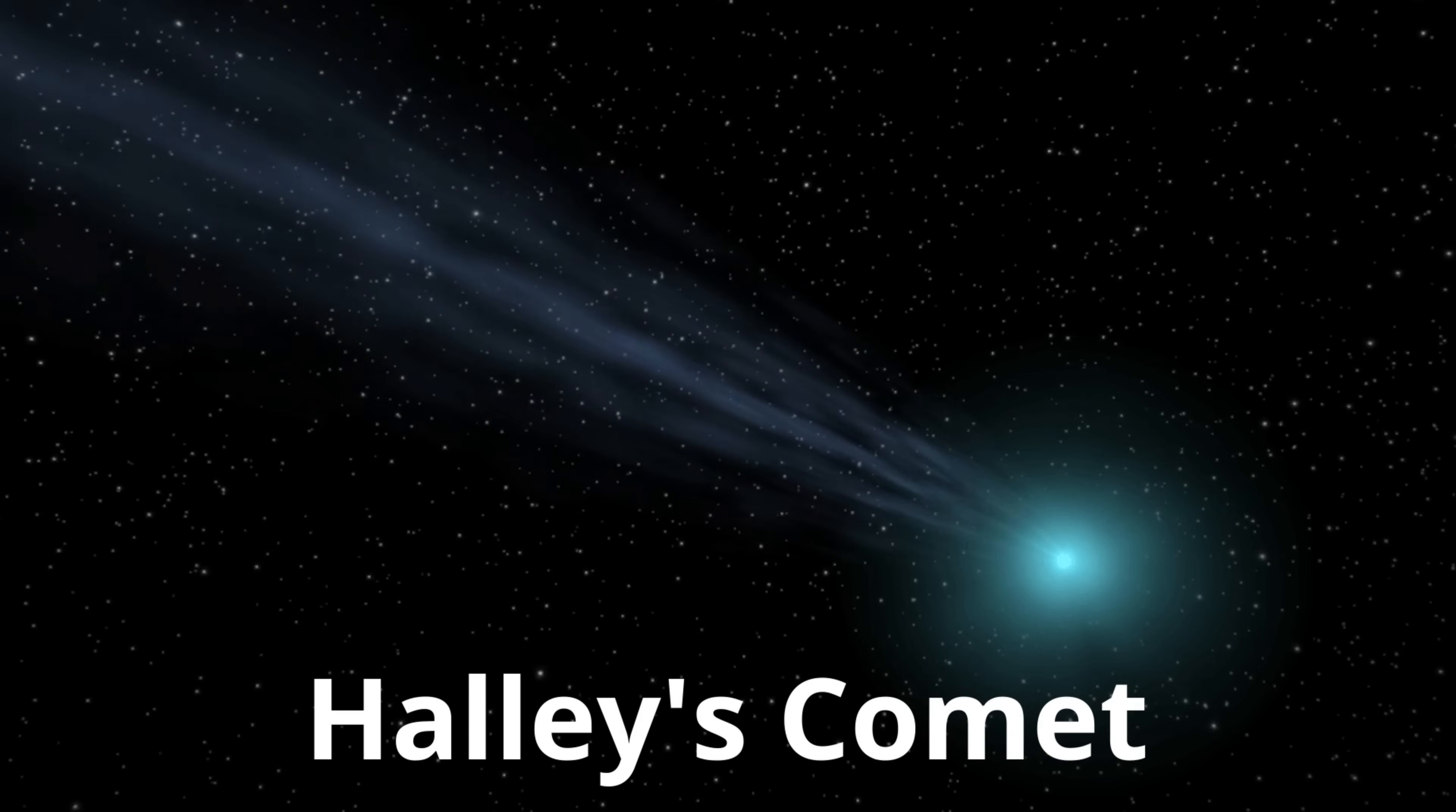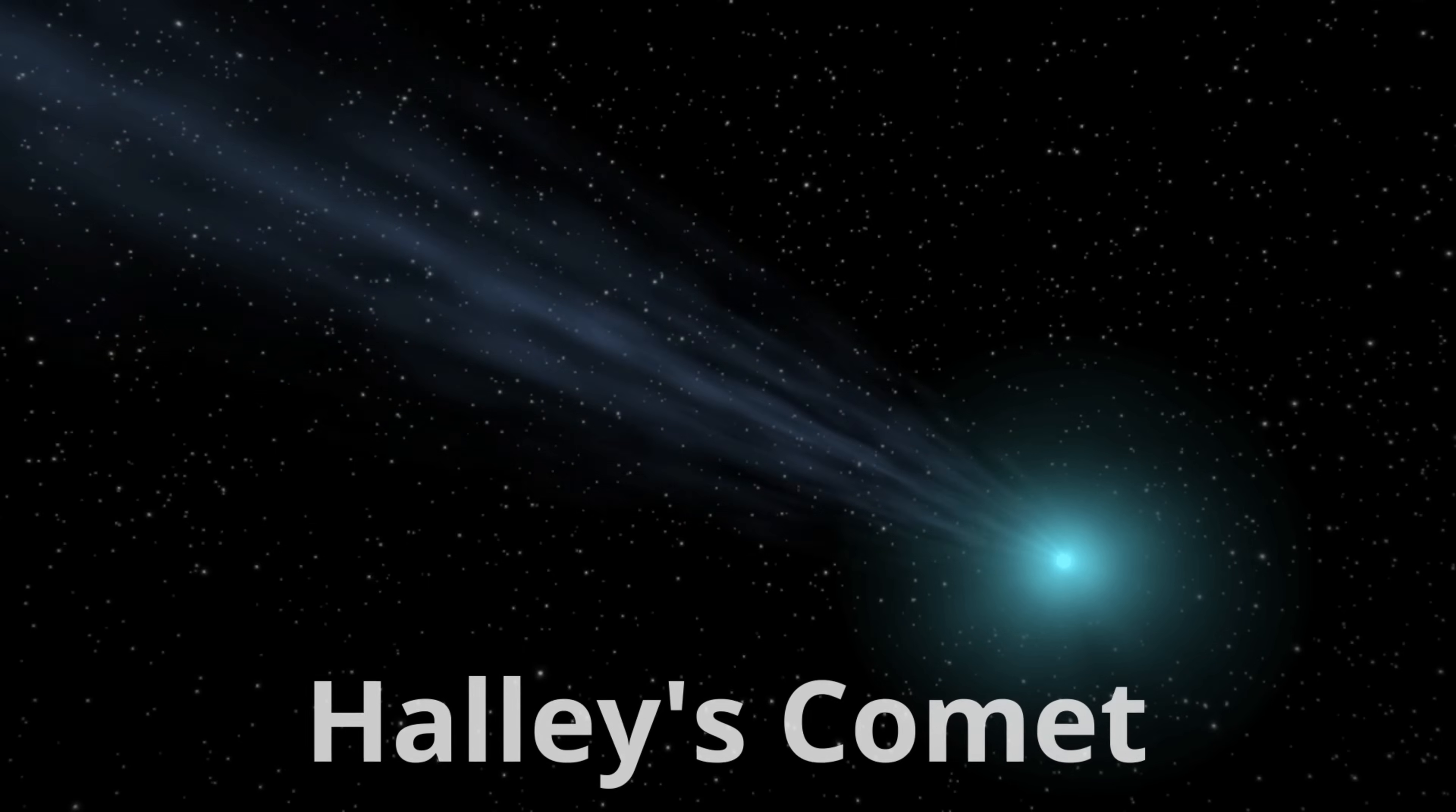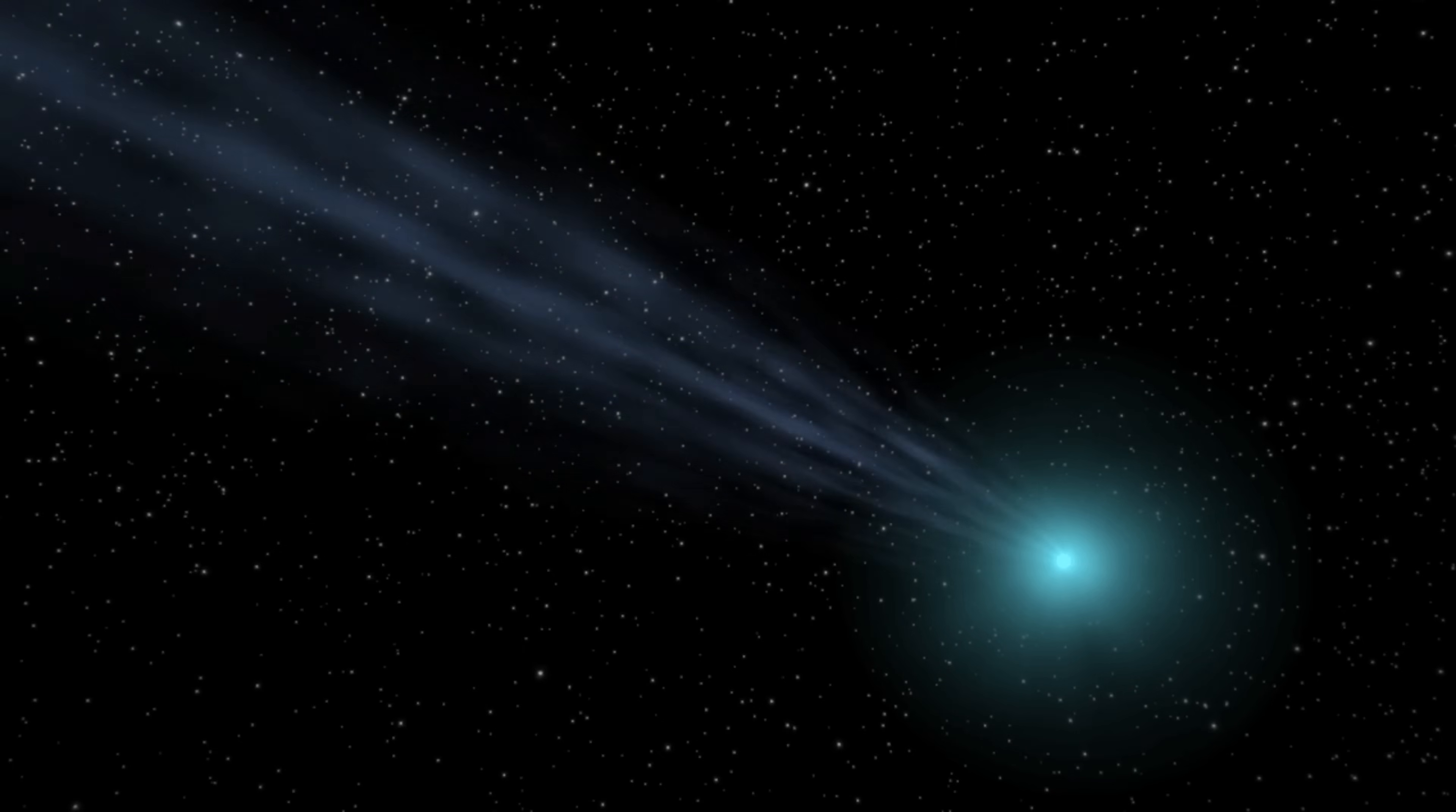Halley's comet is a very famous comet that was discovered by English astronomer Edmund Halley. He was the first to realize that it was the same celestial body that returned to Earth's skies every 76 years. In the year 1705, he correctly predicted that the comet would return in the year 1758. The comet was then named Halley's Comet in his honor. It was last seen on Earth in 1986.